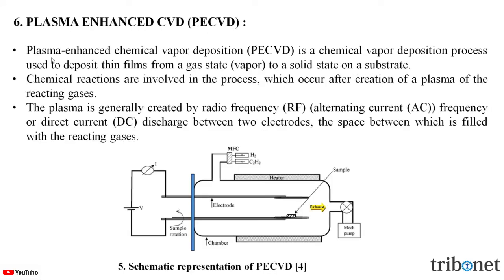Plasma enhanced CVD is a type of CVD process used to deposit thin film from a gas or vapor state to a solid on a substrate. Chemical reactions occur after creation of a plasma of the reacting gases. The plasma is generally created by radio frequency, alternating current frequency, or direct current discharge between two electrodes, the space between which is filled with the reacting gases. Here in this figure, we can see the schematic representation of PECVD.